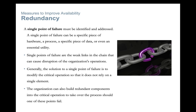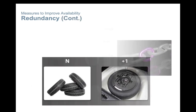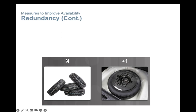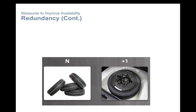We'll look at redundancy options one by one. N+1 redundancy ensures system availability in the event of a component failure. If there are N components, you need to have at least one backup component. For example, a car has four tires — equal to N components — and a spare tire in the trunk in case of a flat, which is the plus one.